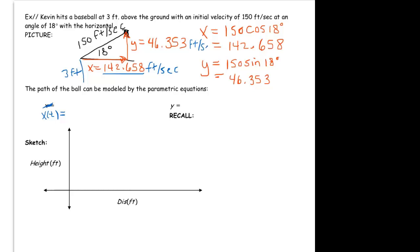So the rate initially is 142.658 feet per second. I'm going to write 142.658 t, and recall that the vertical position is going to be given by the initial height plus the initial vertical velocity times time and then the gravitational constant times time squared.